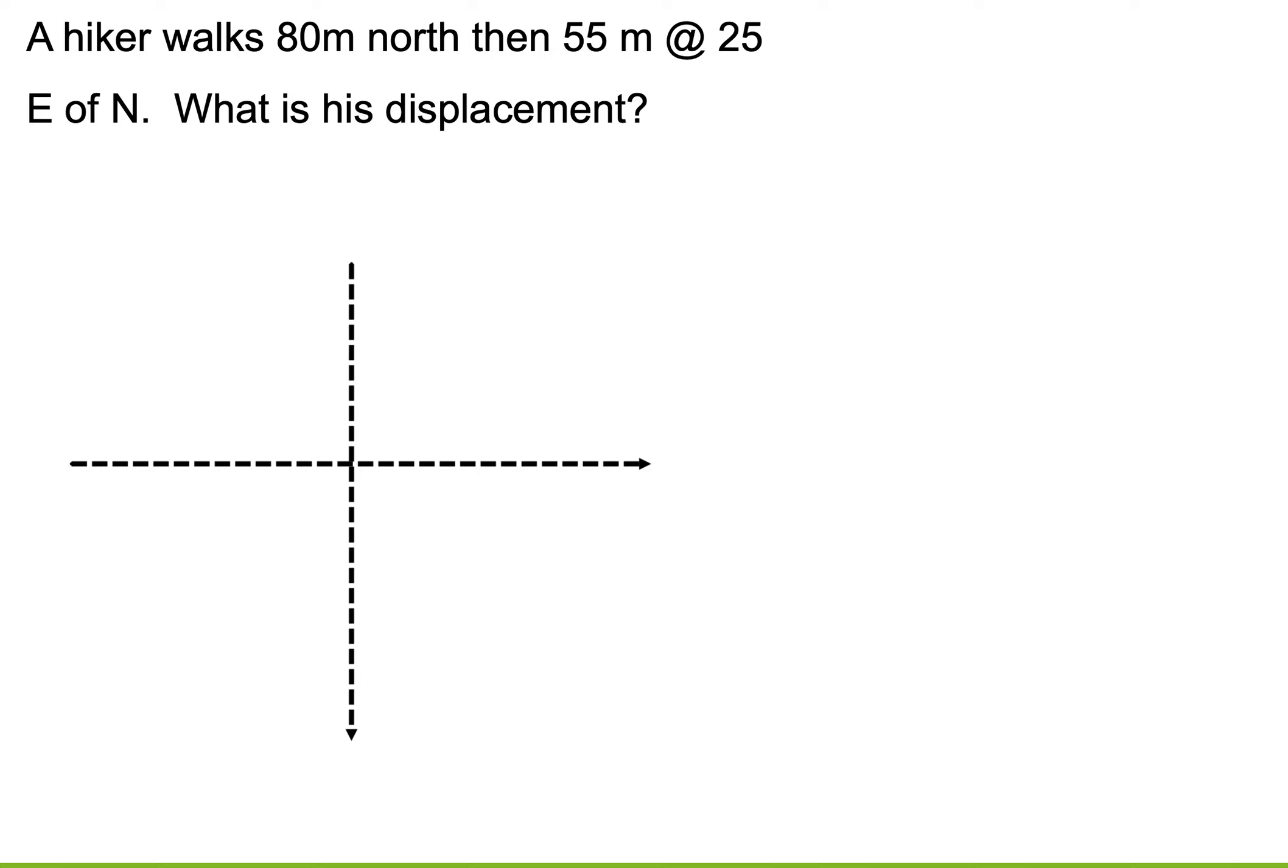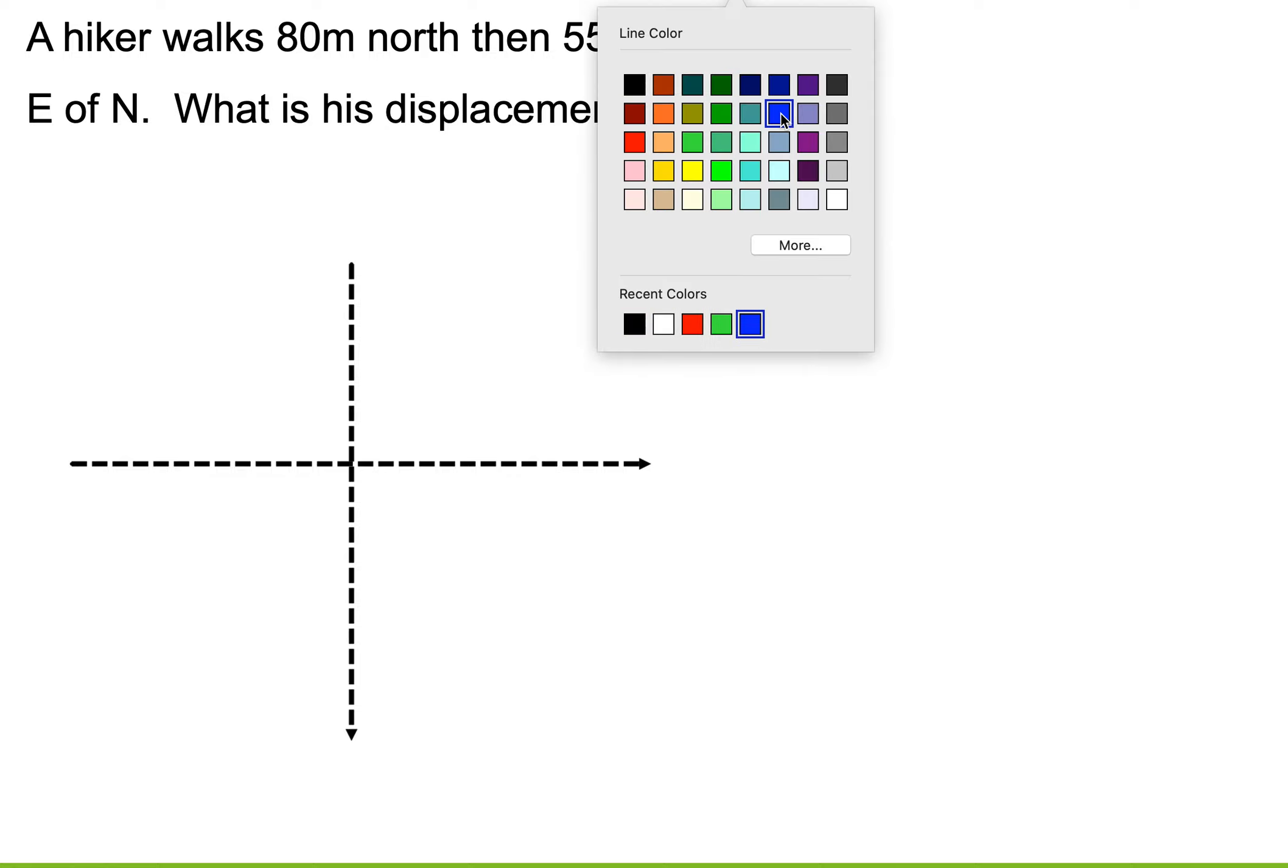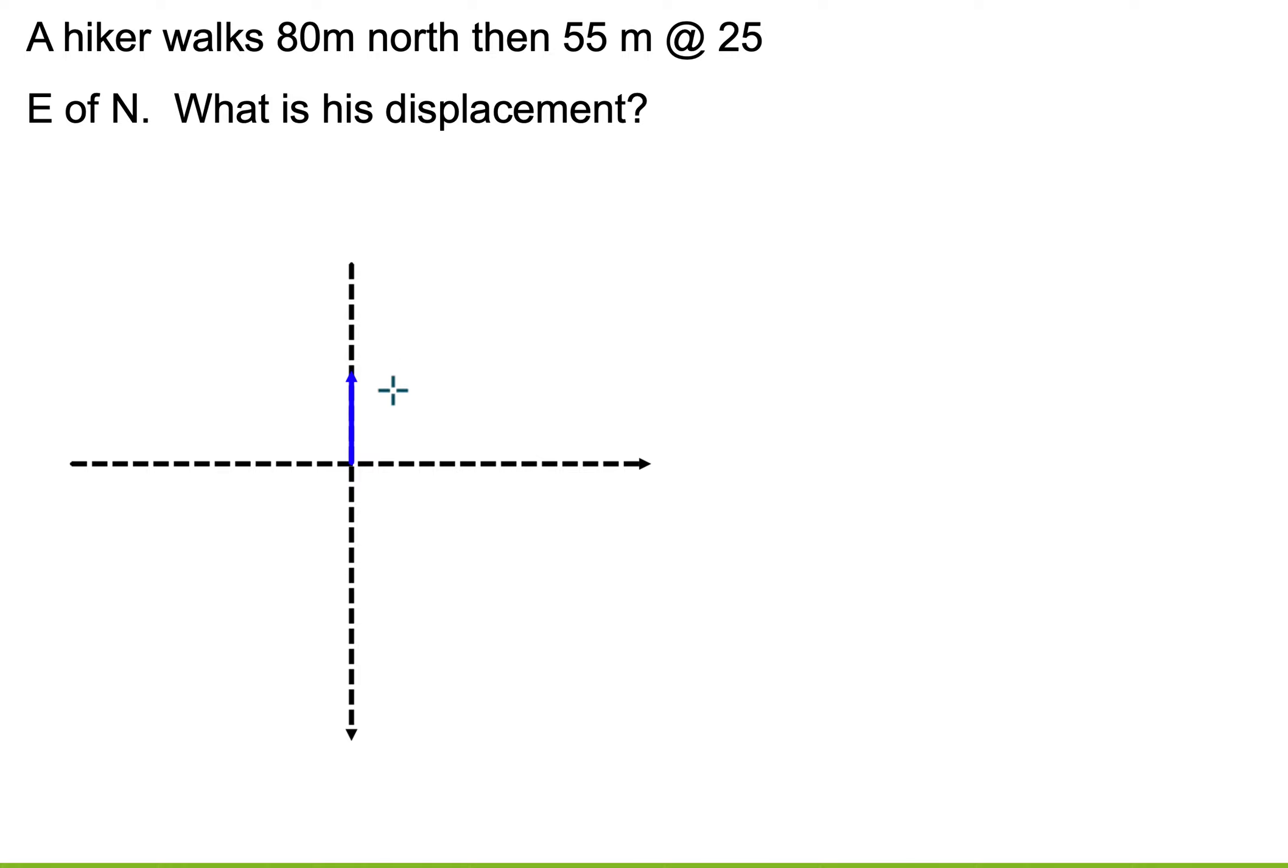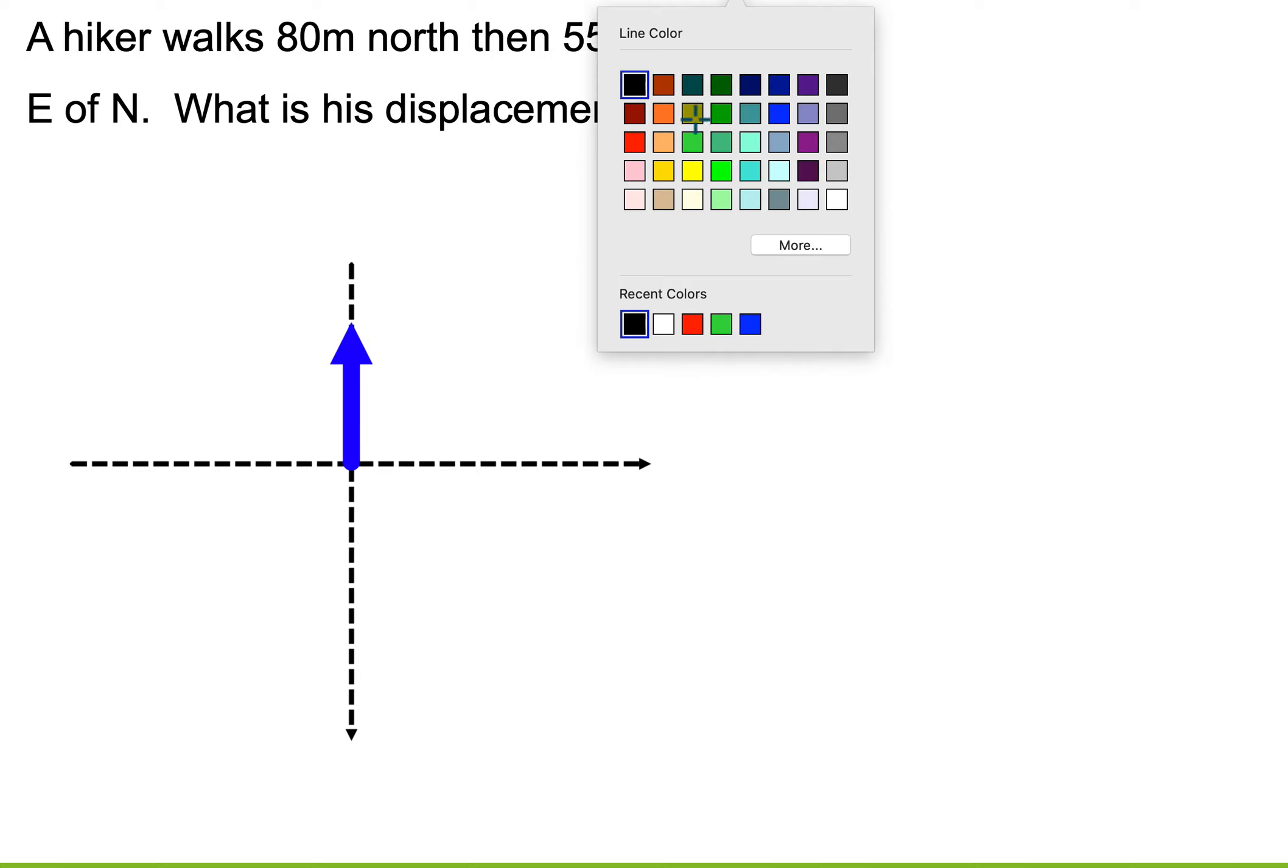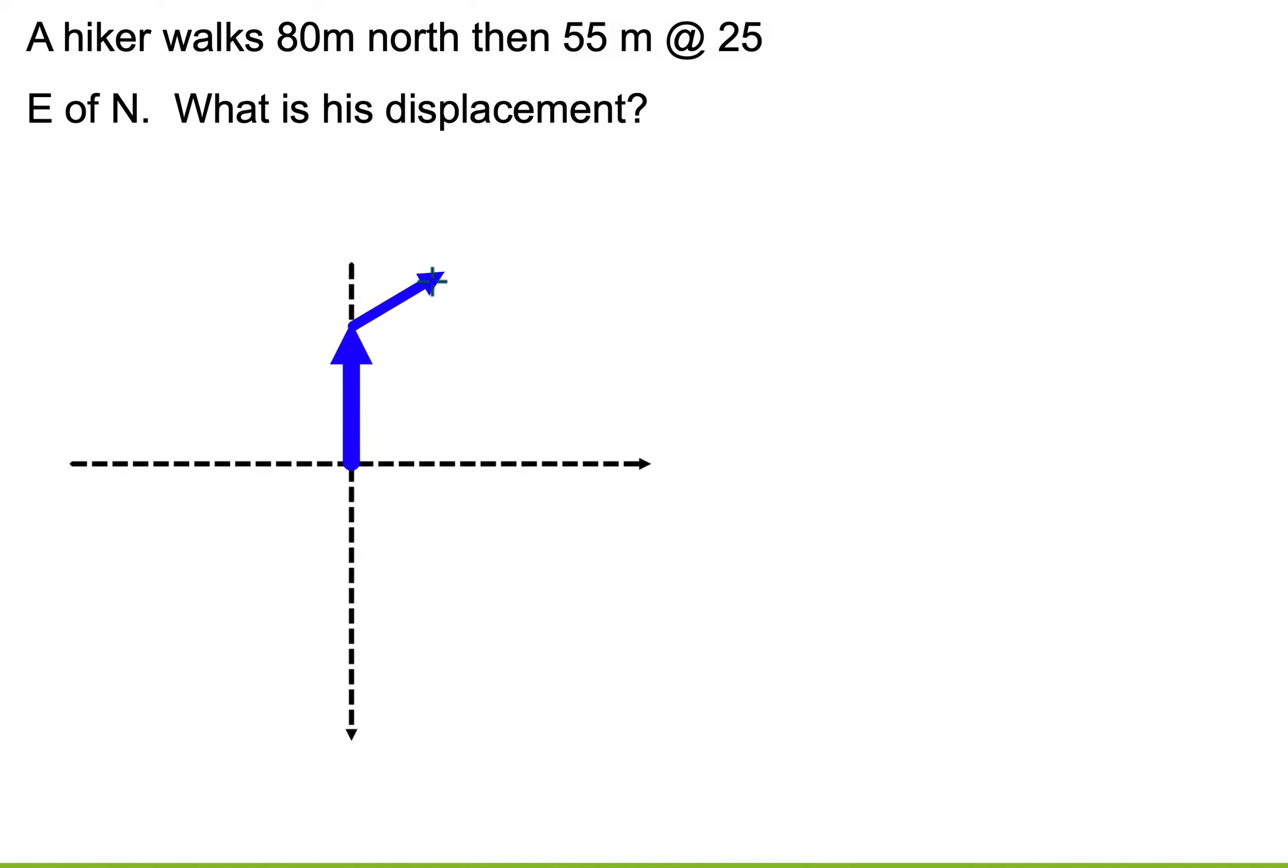I'm going to draw out what that would look like. I'm going to grab a line, I'll make it blue just so it'll be easier. Let's say that this is our vector for 80 meters. Then I have the 55 meters. So I would draw my second vector, and it's going 25 degrees east of north. So that might be like that.